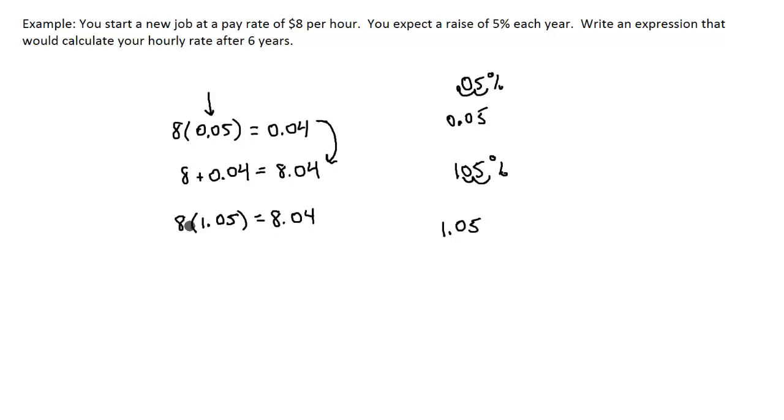Our next step would be to build onto what we have. So if we take $8 and multiply it by 1.05, we would get our new hourly rate after one year. But on our question, we want it after six years. So we want to apply 1.05 to 8 six times. So then we would make our exponent up here 6. So then we take 1.05, raise it to the 6th power, and then that number would be multiplied by 8, and that would give us our new pay rate after six years.